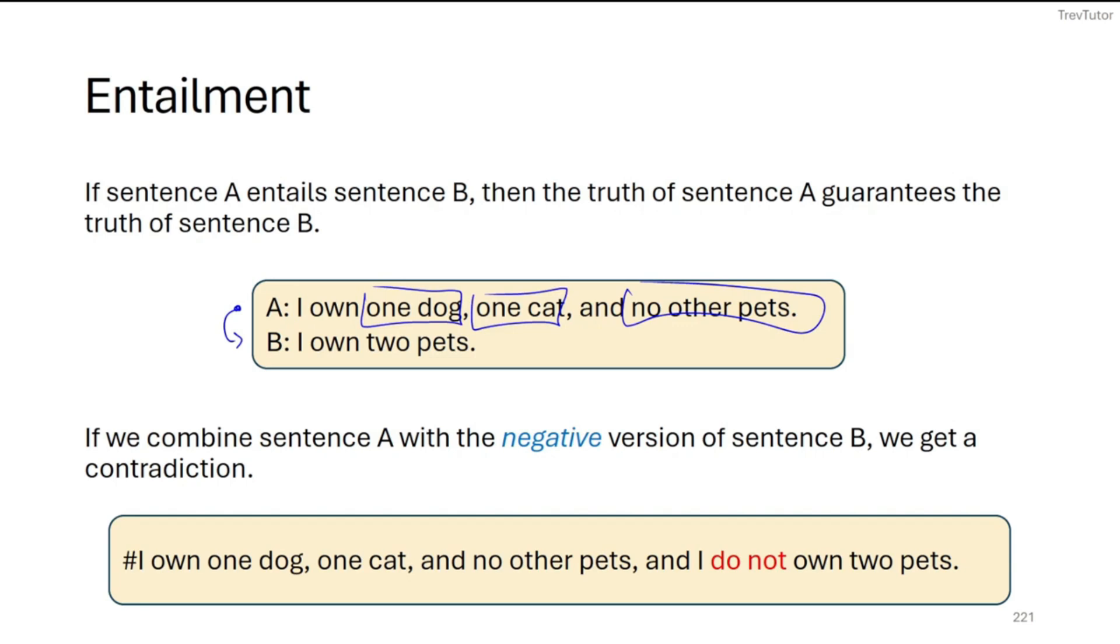Now, in order to check for entailment, we can take sentence A, and we can take the negation of sentence B, combine them together, and if we get a contradiction, then we have entailment. Because if A entails B, then A should mean that B is true.